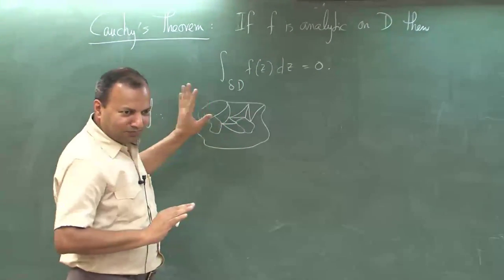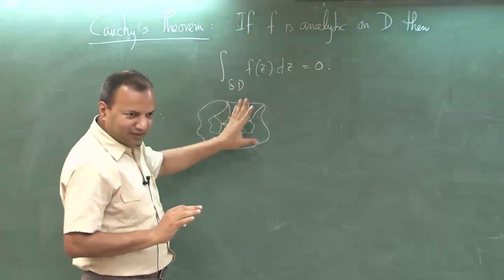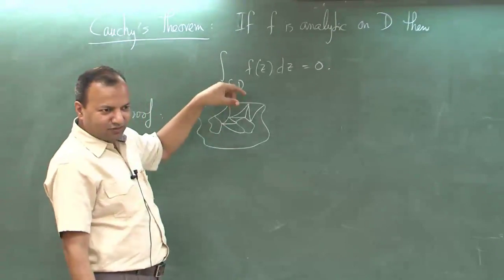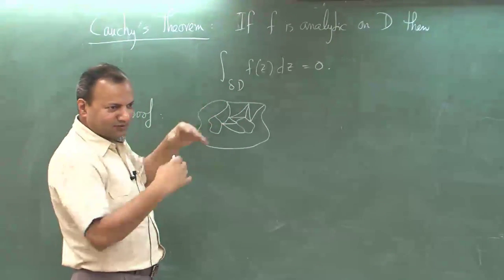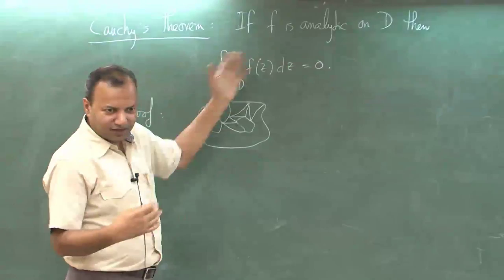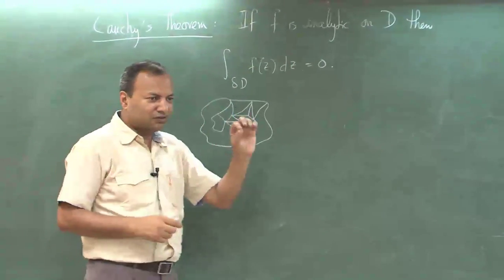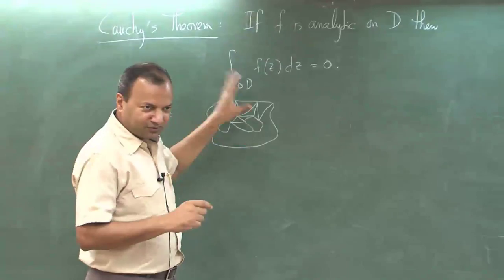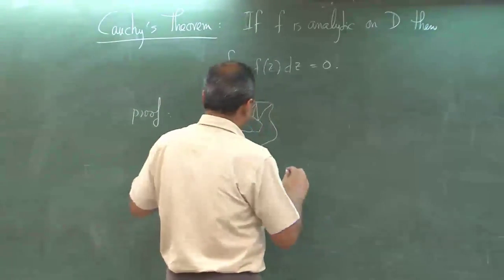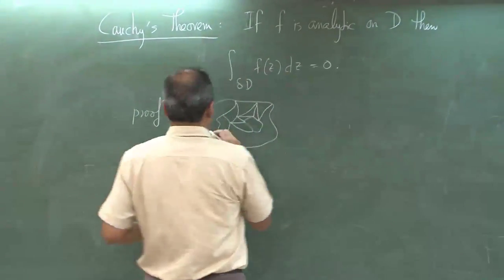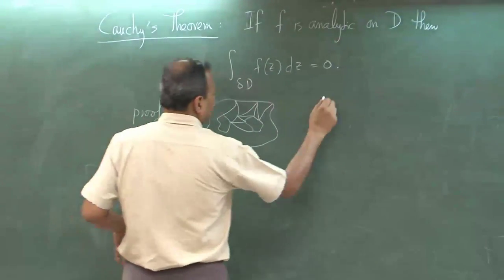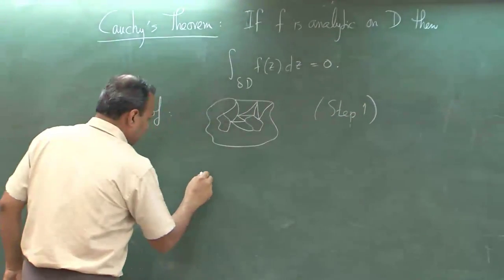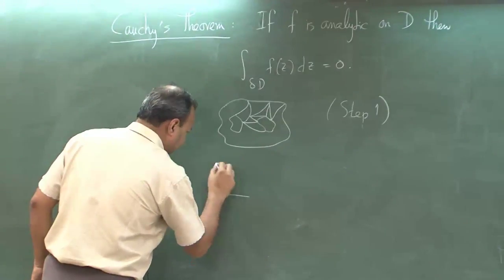First, you agree that we can split it in this fashion into three shapes, integrate over each one of them, and add them up. Whatever the summation of integrals is becomes the final integral. So the problem boils down to integrating over a triangular shape. Step 2 is to look at a specific triangle — the real triangle.